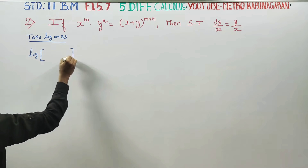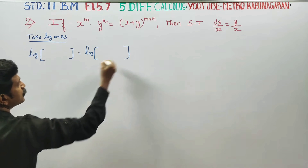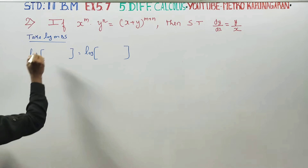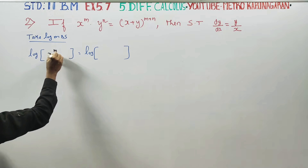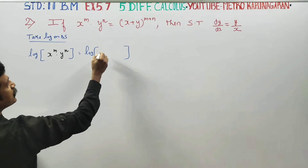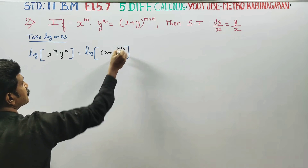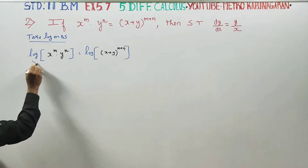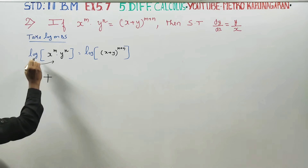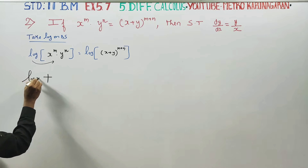In the LHS, log of x power m times y power n: that is, x plus y to the power m plus n. Using the log power rule, multiplication becomes addition. So log gives us m log x.